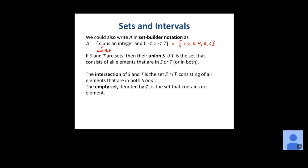If S and T are sets, the union of S and T, denoted with the ∪ symbol, is the set of all elements that are in S or T or both — essentially combining both sets into one. The intersection, denoted with the ∩ symbol, consists of all elements that are in both S and T — just the overlap between them. The empty set, denoted with a special symbol, is the set that contains no elements at all.